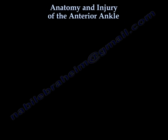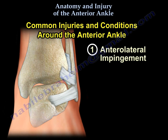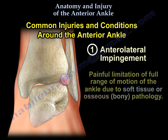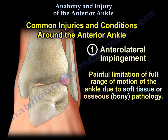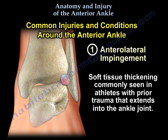There are many structures present at the anterior aspect of the ankle, and these structures are often susceptible to injury. The first condition is anterolateral impingement: painful limitation of full range of motion of the ankle due to soft tissue or osseous bony pathology. Soft tissue thickening is commonly seen in athletes with prior trauma that extends into the ankle joint.